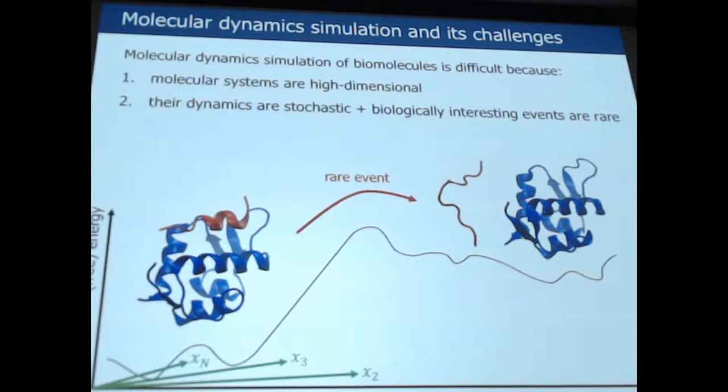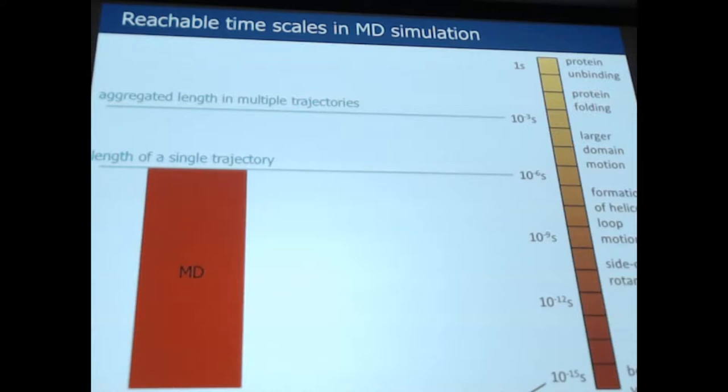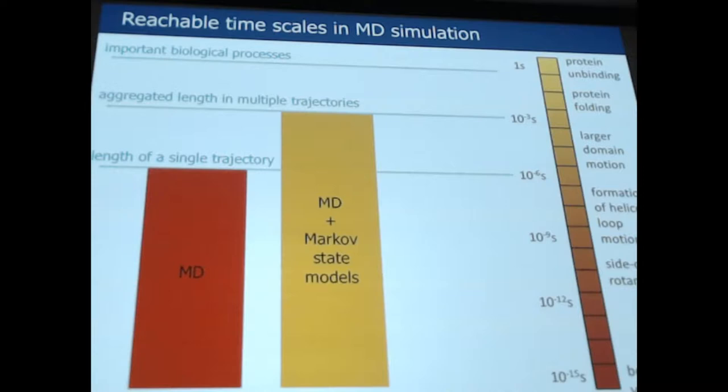Since everybody can buy supercomputer time, or it's accessible, most people are stuck with running on GPUs, and the single trajectory length that can be achieved on GPUs is typically on the microsecond time scale. By using Markov state models, as many speakers have shown, it's possible to combine many short trajectories into an aggregate model, which allows to model time scales reaching to the millisecond and beyond.